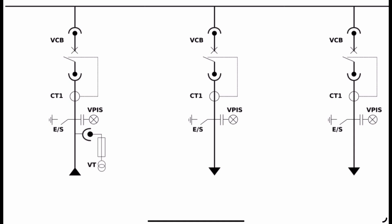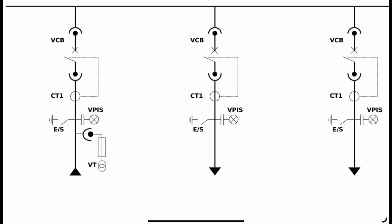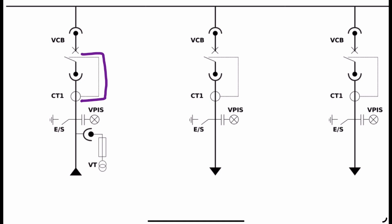Moving on, we have a current transformer — the simple circle symbol represents a current transformer. Just like the voltage transformer, the CT helps us measure the current flowing into the system and also provides protection if needed. You will also notice a connection going from the current transformer towards the circuit breaker — that input goes to its trip coil, and based on that, the circuit breaker can trip.